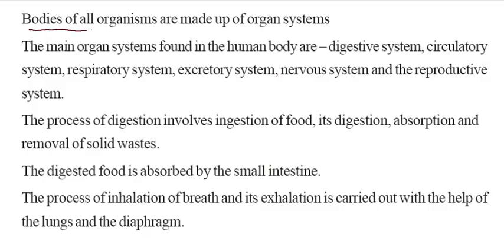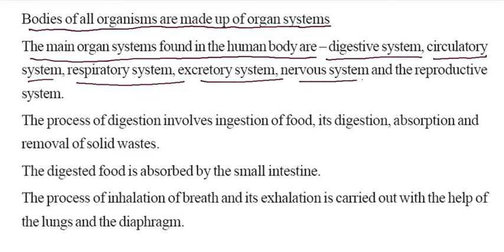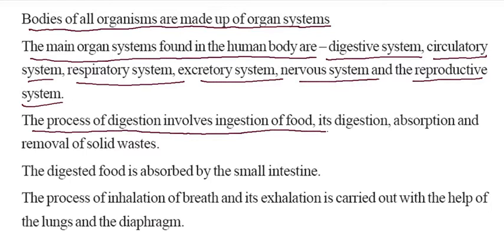All the organs are made up of organ systems. The main organ systems found in the human body are the digestive system, circulatory system, respiratory system, nervous system, and the reproductive system. The process of digestion involves ingestion of food, its digestion, absorption, and removal of solid waste.